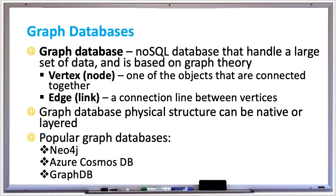Popular graph databases include Neo4j, which is the most popular property graph database. There's Azure Cosmos DB, which is Microsoft's multi-model database. And GraphDB, which is a graph database and knowledge discovery tool compliant with RDF and Sparkle and available as a high availability cluster.